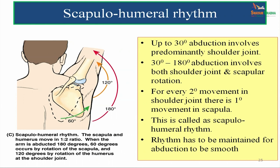What is scapulohumeral rhythm? Whenever the shoulder joint moves, there is also a rotation of the scapula being brought about. Up to 30 degrees, abduction involves predominantly the shoulder joint alone. When abduction moves from 30 to 180 degrees, it involves both the shoulder joint and scapula rotation. For every 2 degrees of movement in the shoulder joint, there is 1 degree of movement in the scapula — this rhythm is called the scapulohumeral rhythm, and it must be maintained for abduction to be smooth.